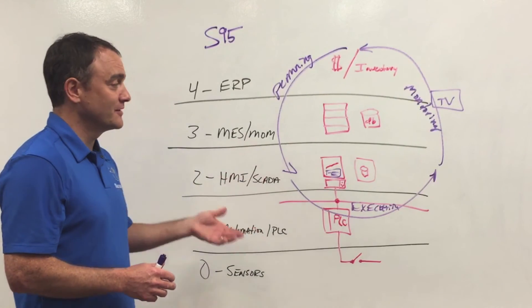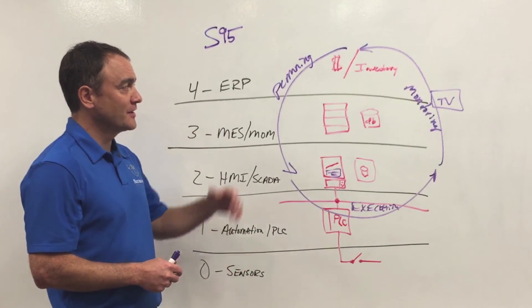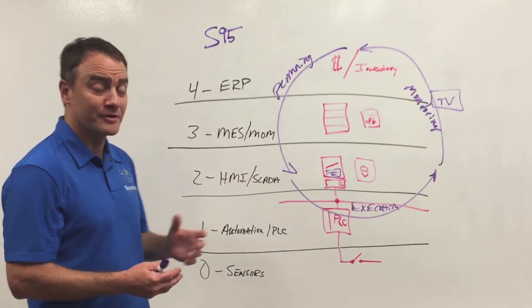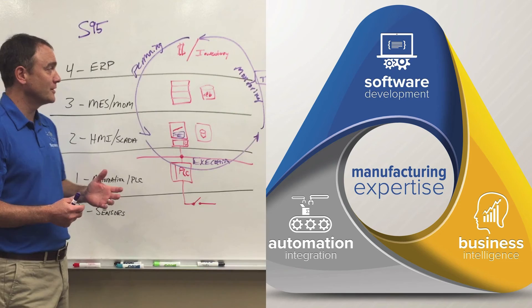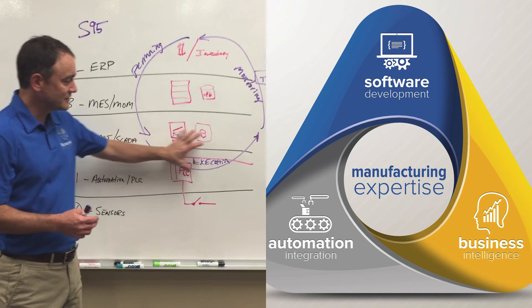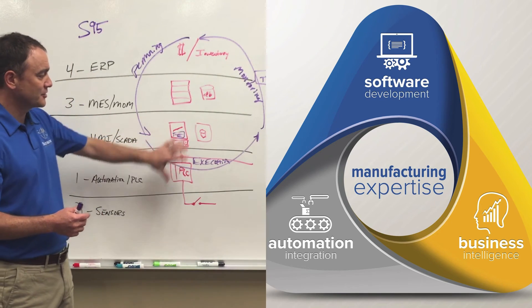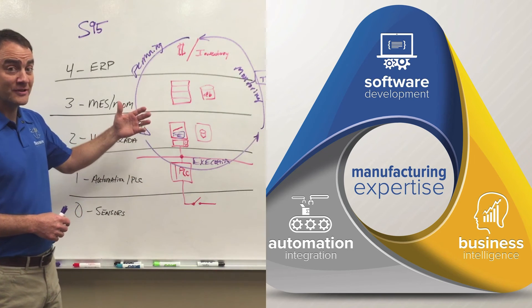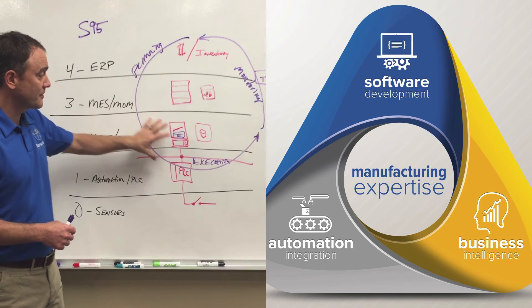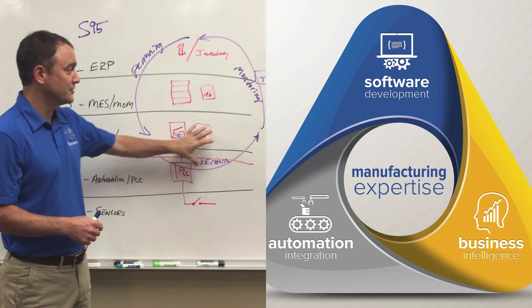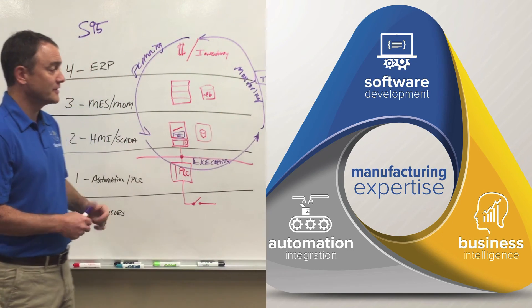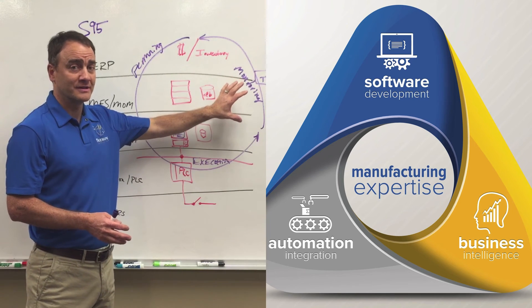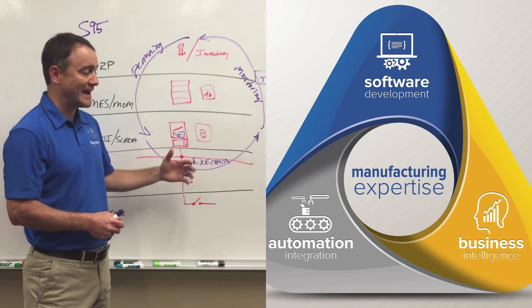So in addition to the S95 standard in these five levels, FlexWare layers on these three flows: the planning, execution, and monitoring flow, and it really aligns with our teams here at FlexWare as well. So we have an automation integration team that focuses down here in integrating these layers, HMI, SCADA, and PLC. We have a software development team that writes custom software and integrates software in the planning and execution and into the monitoring phase. And then we have a business intelligence team that really focuses more on the monitoring and displaying of the information that comes out of these flows.